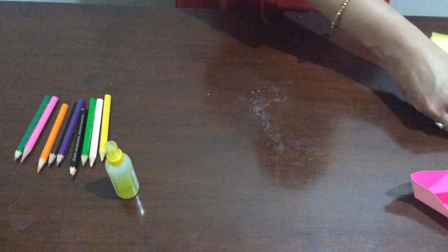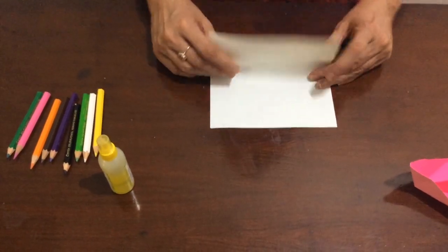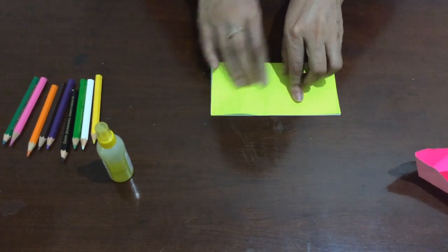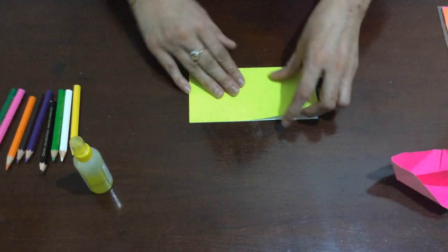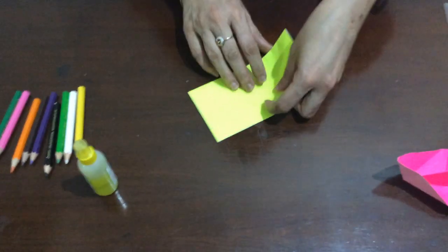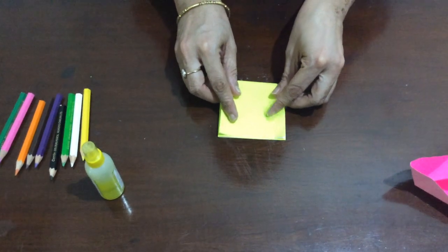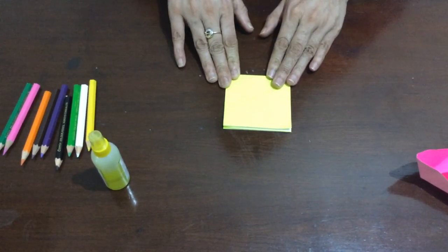First ask your children to turn the paper upside down and fold the square to make a rectangle. The children are also learning shapes through this. Now turn this rectangle again and fold it again to make a square.